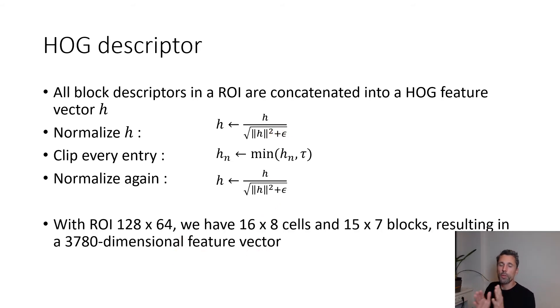With a region of interest of 128 by 64 pixels, we have 16 by 8 cells, 15 by 7 blocks, and that results in a feature vector that has 3780 dimensions. This is our space in which we collect our positive and negative samples and in which the classifier now needs to find the optimal decision boundary.